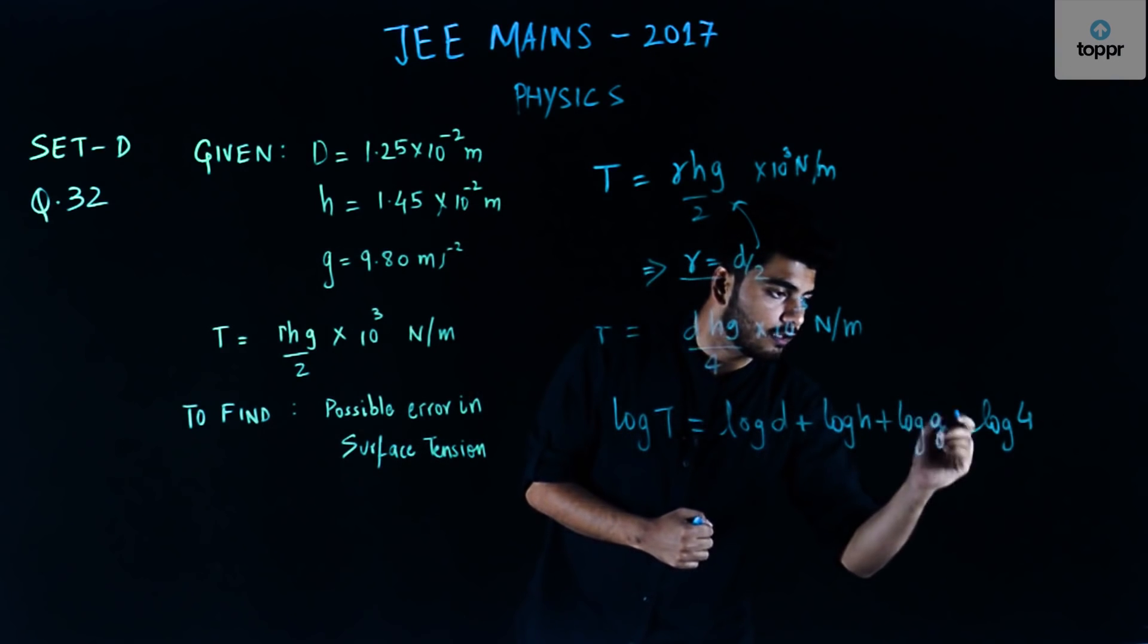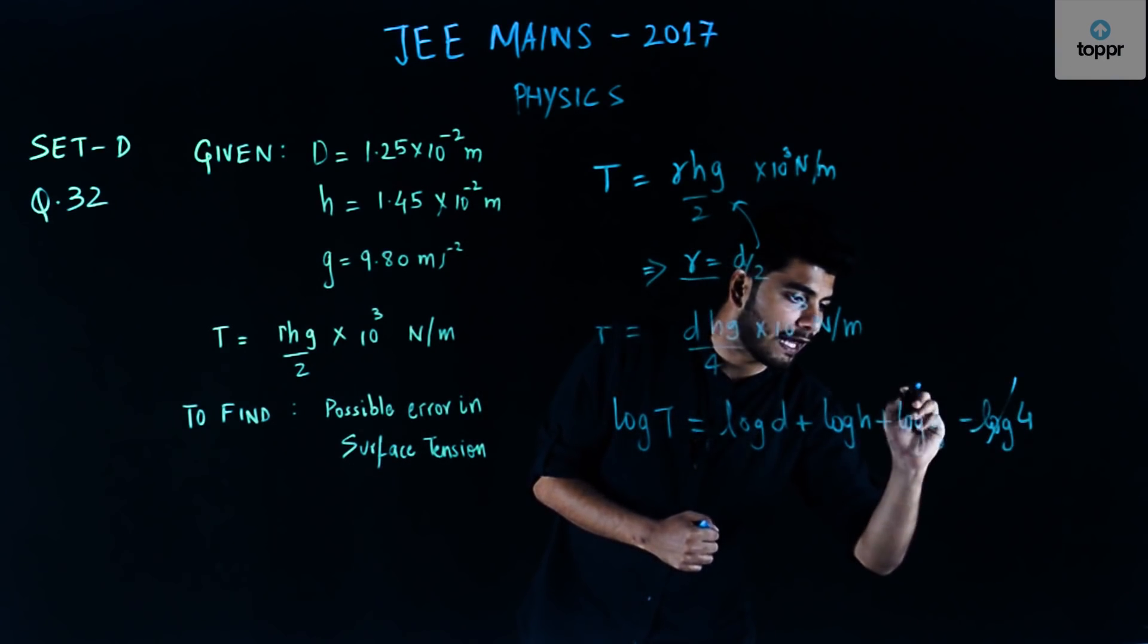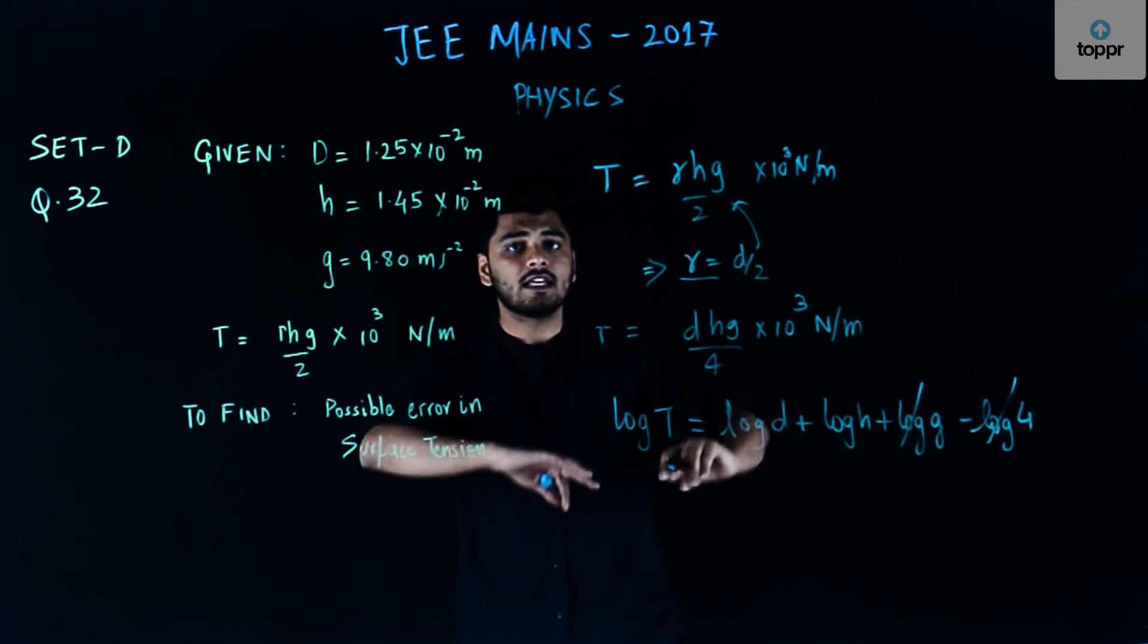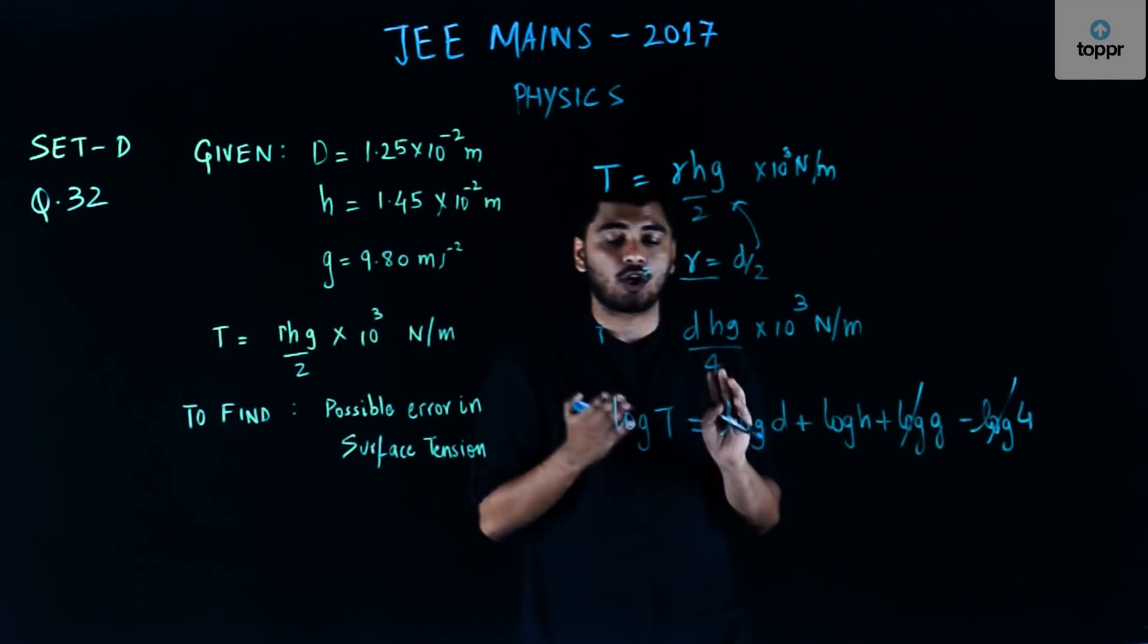Now I know log G and log 4 would have definite values because G is constant, 4 is a constant value. Error in these two values are not possible.